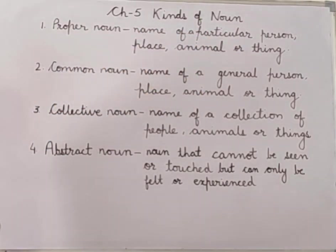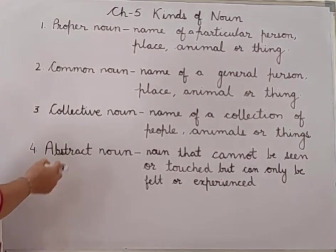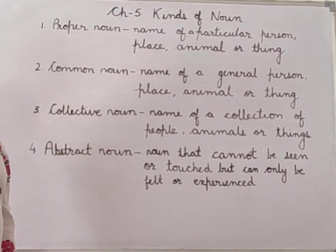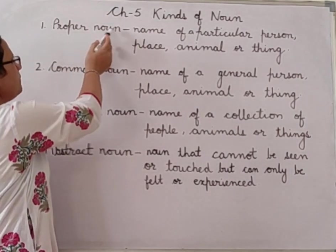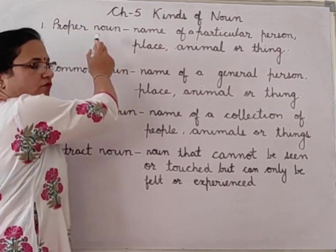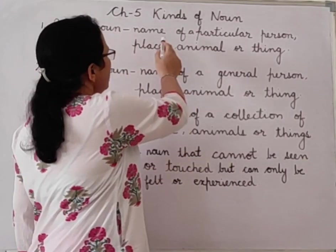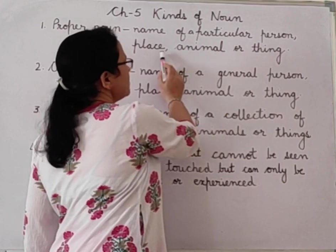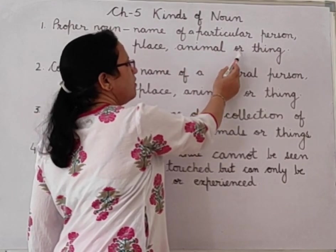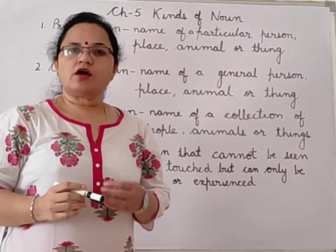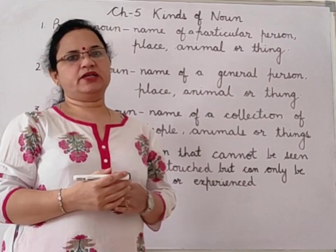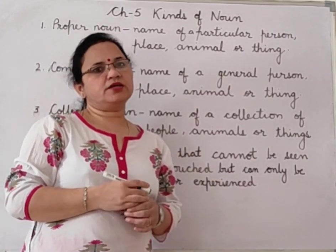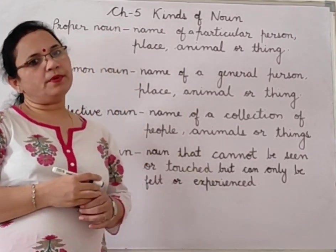Kinds of noun — you have done an exercise of noun. You have done proper noun and common noun. So proper noun — what is proper noun? Name of a particular person, place, animal or thing. When we talk about any particular person, particular place, particular thing, it is called proper noun.